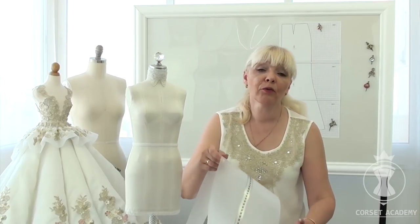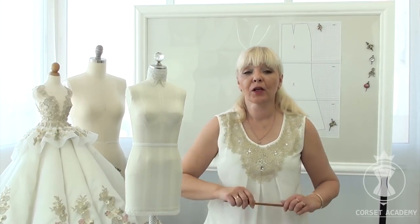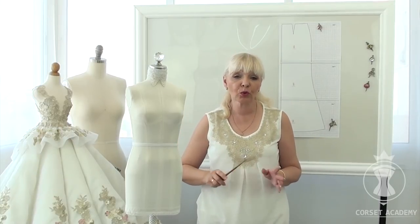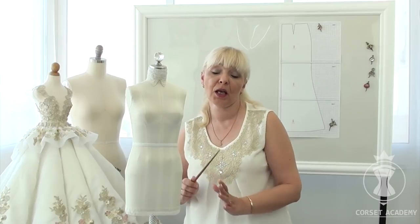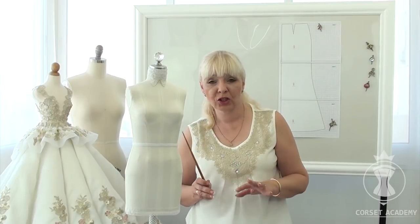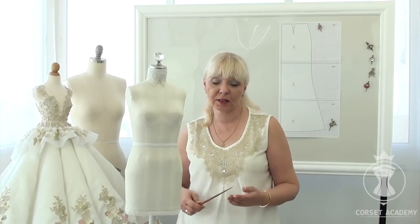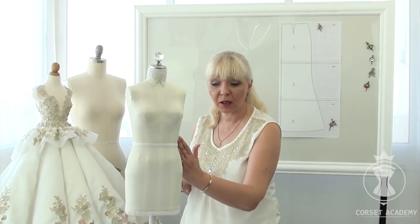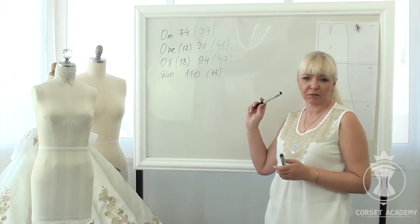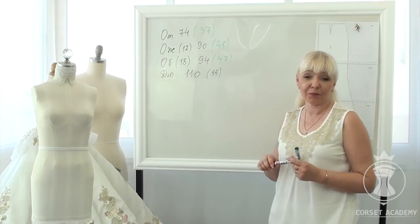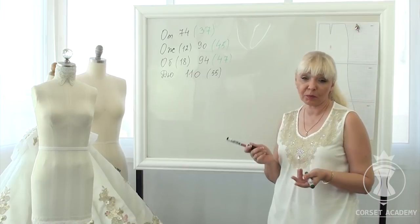I stick to the following rules when calculating side seam configuration. I leave the side seam line as it is if the hip circumference is under 104 centimeters. I shift the side seam line 1 centimeter towards the back of the skirt if the hip circumference is between 104 and 116 centimeters. And I shift the side seam line 2 centimeters towards the back if the hip circumference exceeds 116 centimeters. All measurements taken off the mock-up are written down on the writing board together with their actual values. The half values are put in brackets.